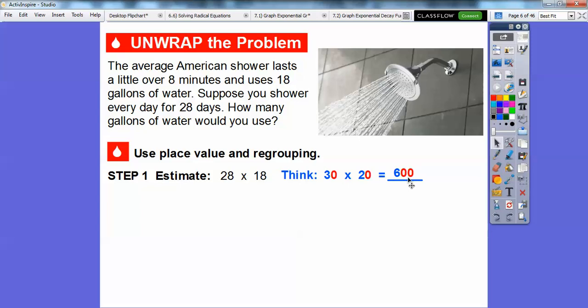So it's going to be a number close to 600. Now since 30 is bigger than 28 and 20 is bigger than 18, 600 is going to be bigger than our number that we get here. So it's going to be a number that's less than 600.